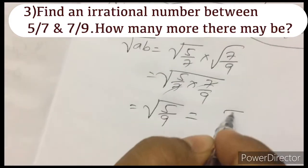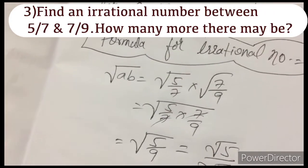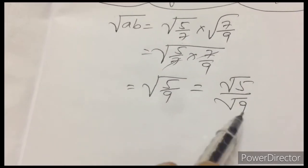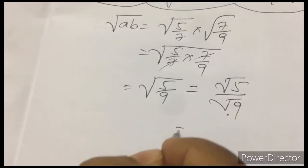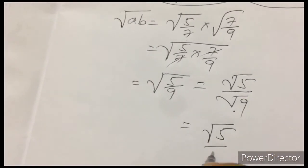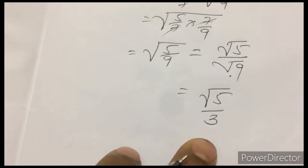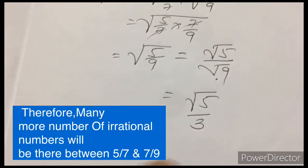Root 5 by 9. Root 5 I can write separately and root 9 I can write separately. So root 9 you have a perfect root, that is 3. I can write like this, root 5 by 3. This is one irrational number between 2 rational numbers.